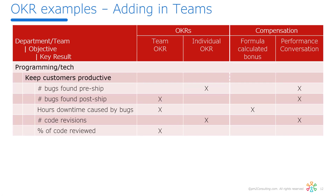Phase two is moving towards team OKRs. Now I've got the same OKRs, but bugs found post-ship is a team OKR, hours downtime caused by bugs is the result of the team's effort, and percent of code reviewed is also a team metric. So now I have a combination of individual OKRs — things that I directly impact — and team-based ones. On the formula-calculated bonus I'm still using hours downtime as a team-based metric, while my individual performance conversations cover the other OKRs. Key results can be team or individual, and they can be part of a hard calculation, part of a conversation, or neither — allowing you to customize the compensation model for teams and individuals.